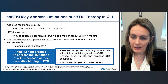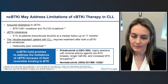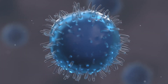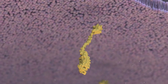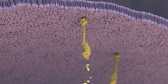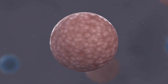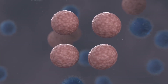In malignant B-cells, BTK can become overexpressed and persistently activated, initiating a signal cascade that leads to proliferation of the malignant cell, allowing it to thrive and resulting in disease progression for patients.